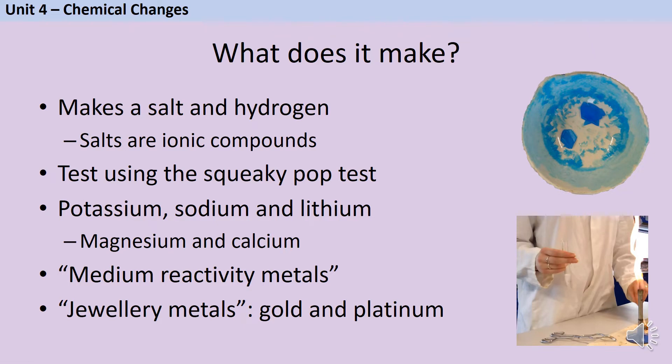Underneath them we have the rest of these medium reactivity metals, things like iron and zinc and tin, which react more slowly. We might see a few bubbles when they react with acid, but not nearly as many as magnesium and calcium.